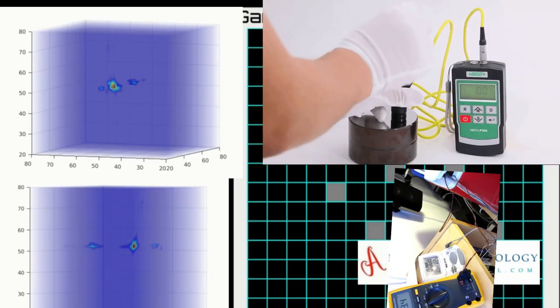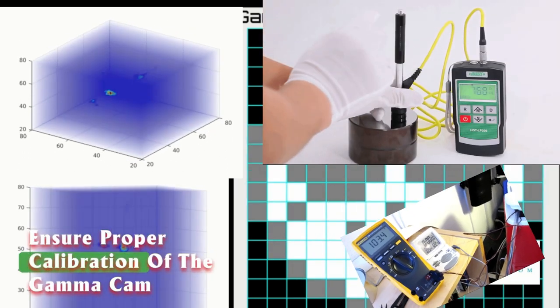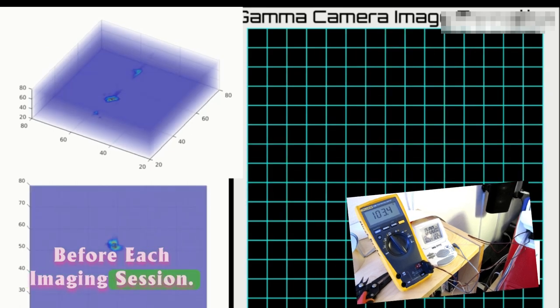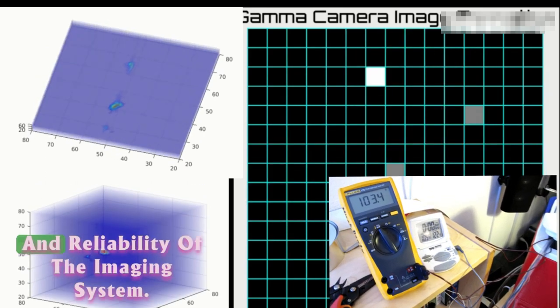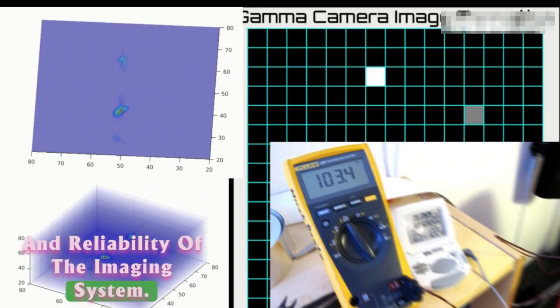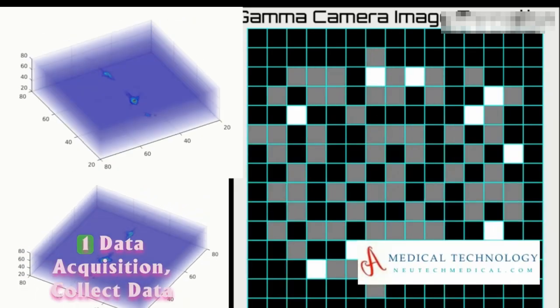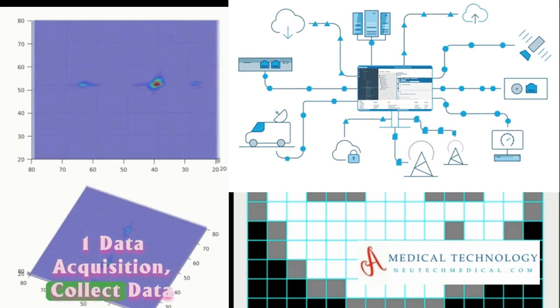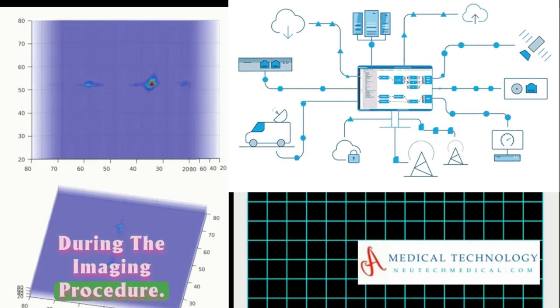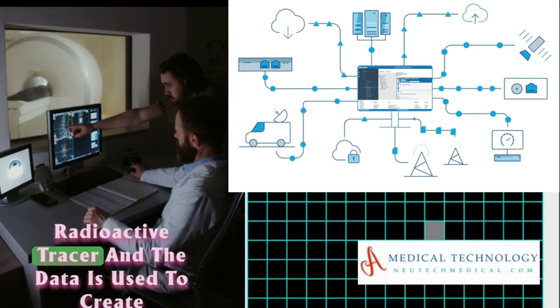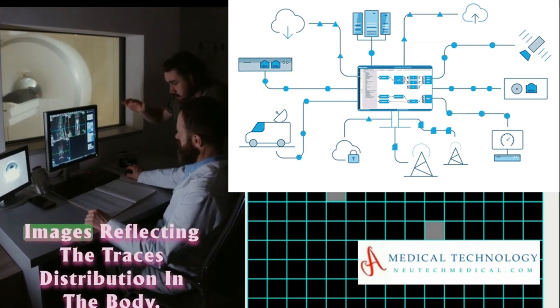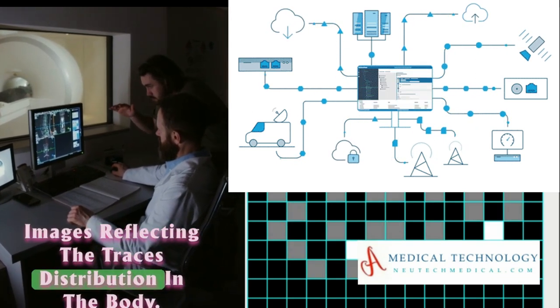Instrument calibration: Ensure proper calibration of the gamma camera before each imaging session. Regular calibration checks help maintain the accuracy and reliability of the imaging system. Data acquisition: Collect data during the imaging procedure. The gamma camera detects gamma rays emitted by the radioactive tracer, and the data is used to create images reflecting the tracer's distribution in the body.